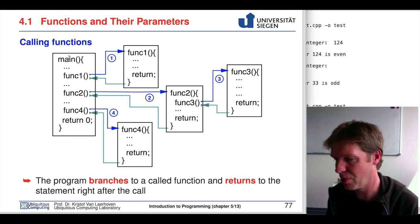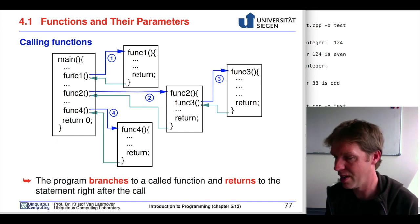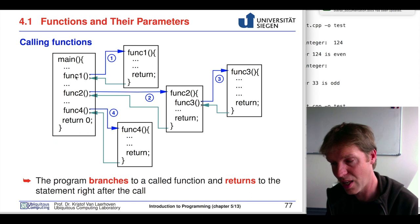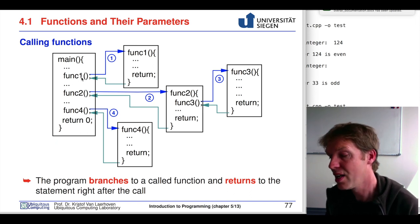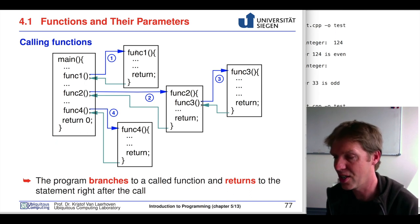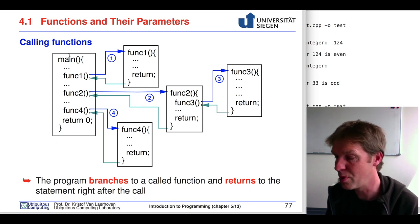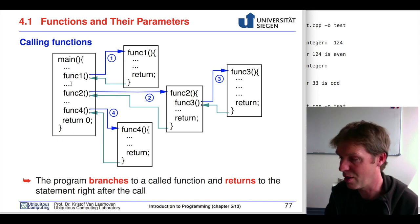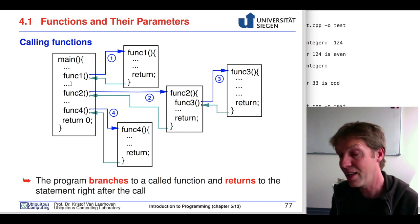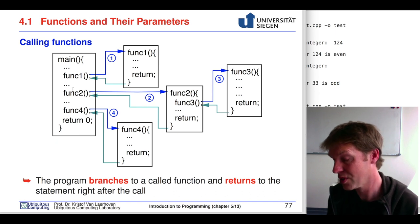We call this branching, because as soon as main starts, or as a program is executed, it will go for the first statement, then the next, and so on. If one of these statements is a function call, the program will branch — it will stop executing main and start executing that function, all the way until it returns. Functions can also be invoked within functions within functions, and they can even go in a circle, as we will see.